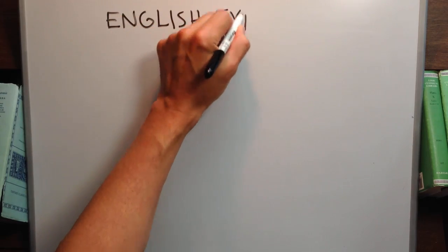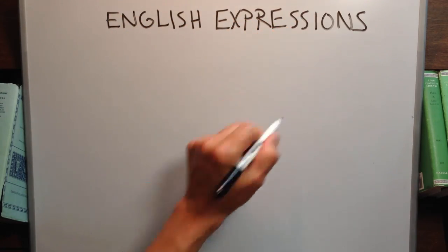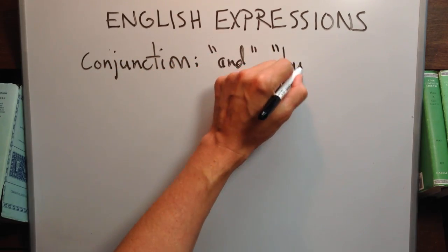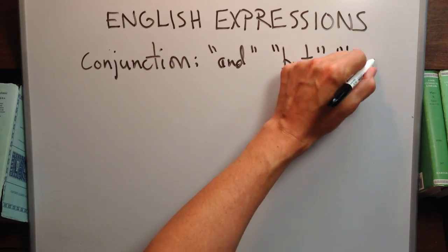Some English expressions that we use to indicate logical connections between statements are for an and, but, and however for conjunctions.